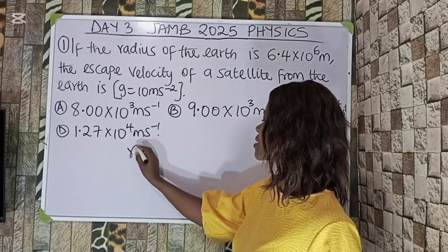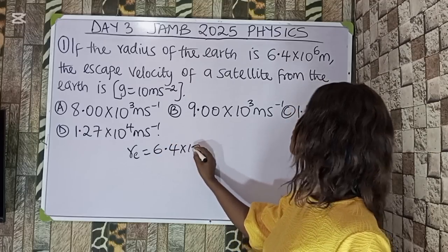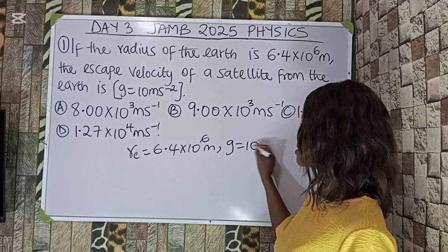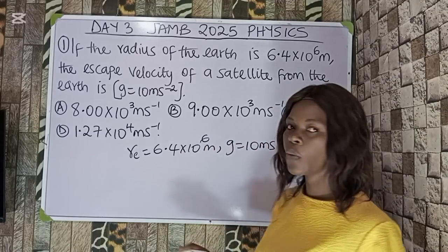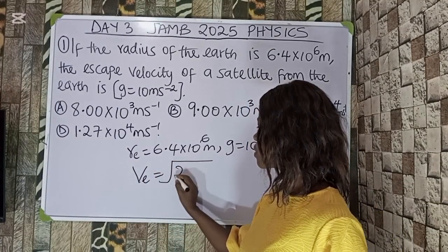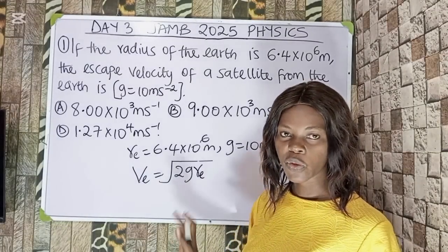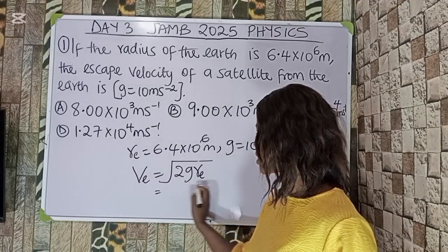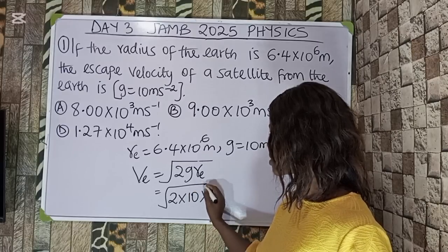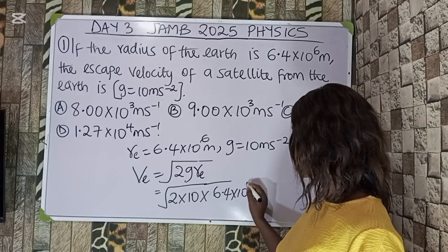The radius of the Earth is given as 6.4×10⁶ meters, and g is given as 10 meters per second squared. The formula for escape velocity is v_e = √(2gR), where R is the radius of the Earth. Substituting, we have the square root of 2 × 10 × 6.4×10⁶.